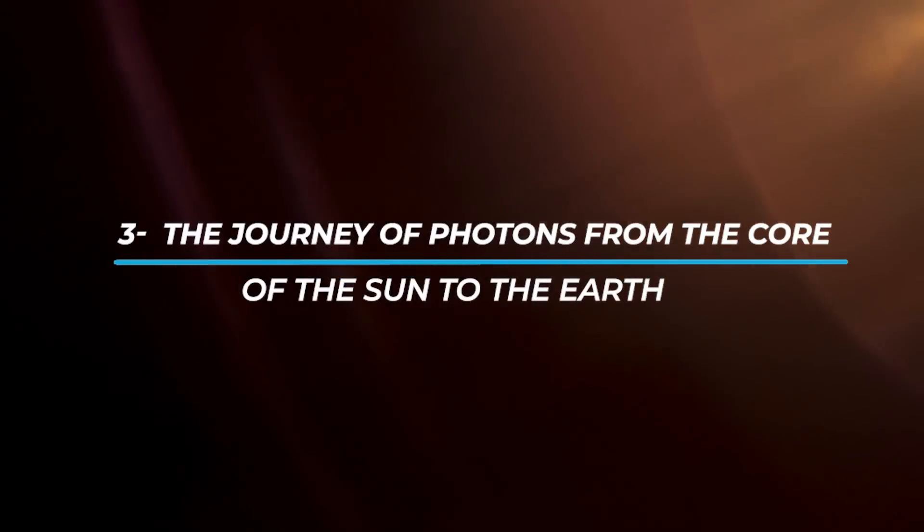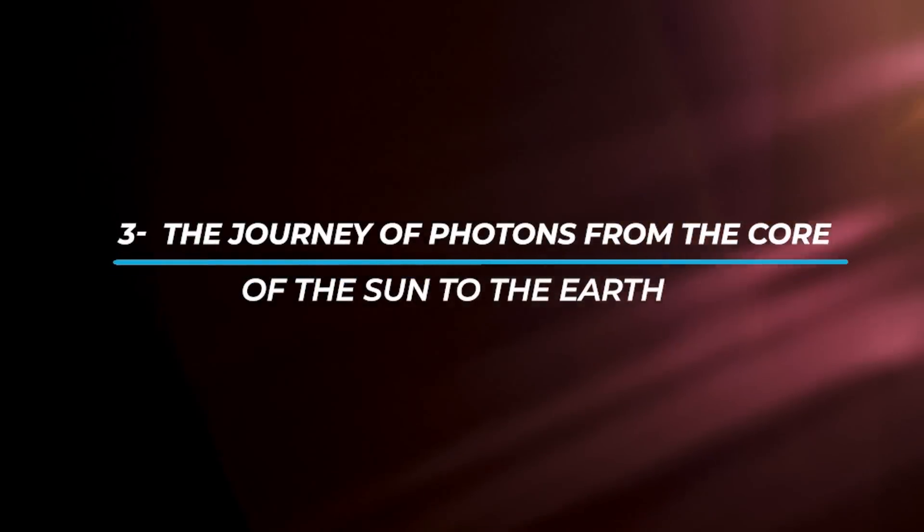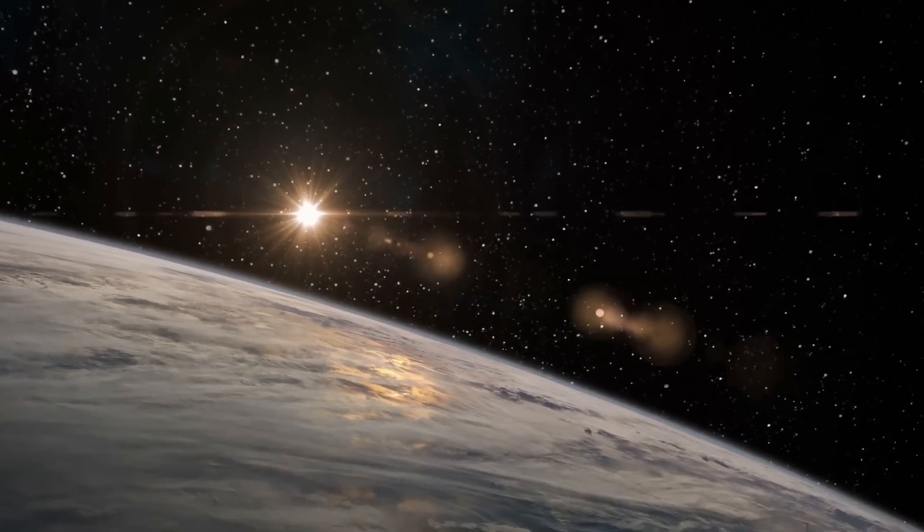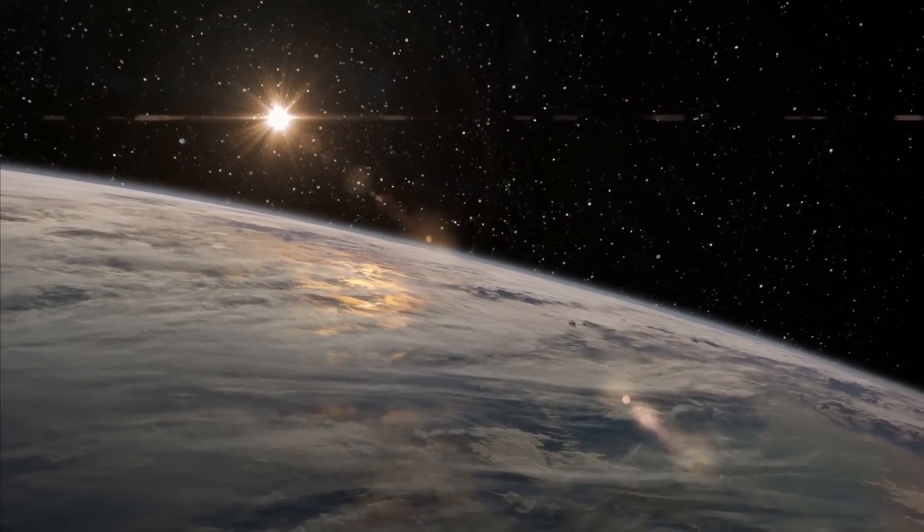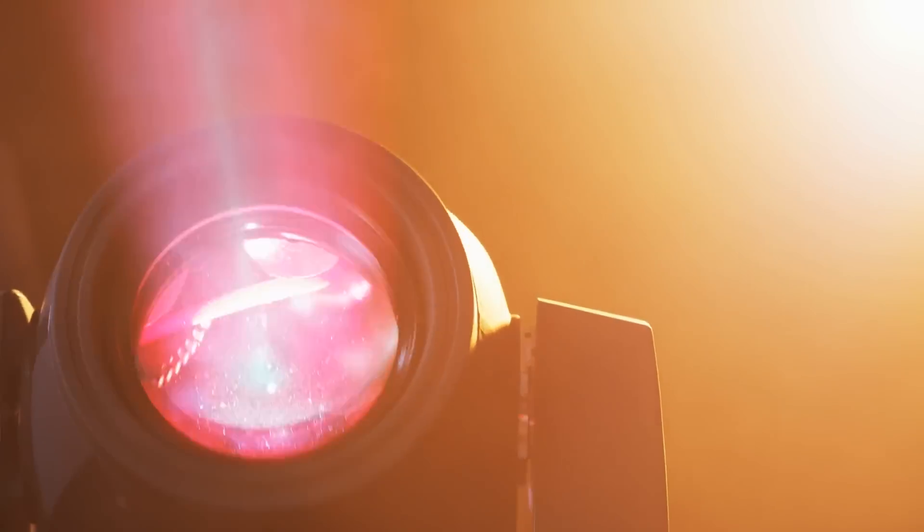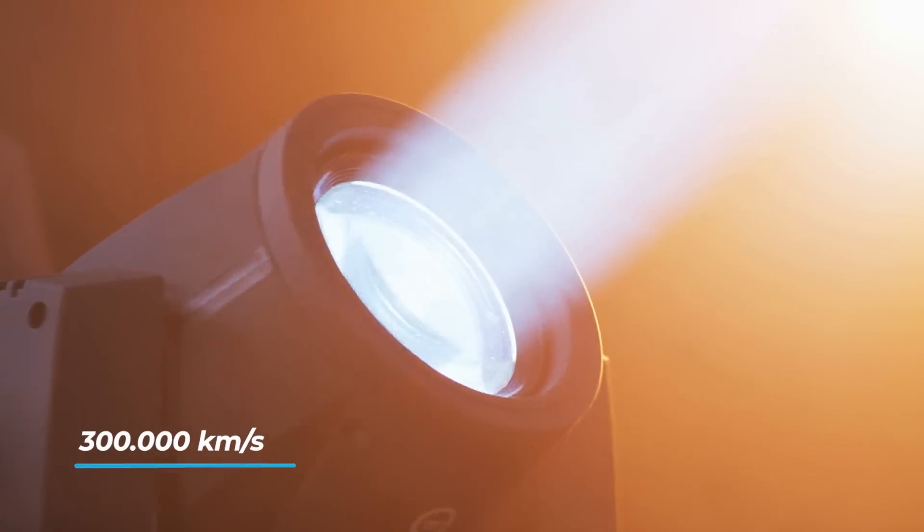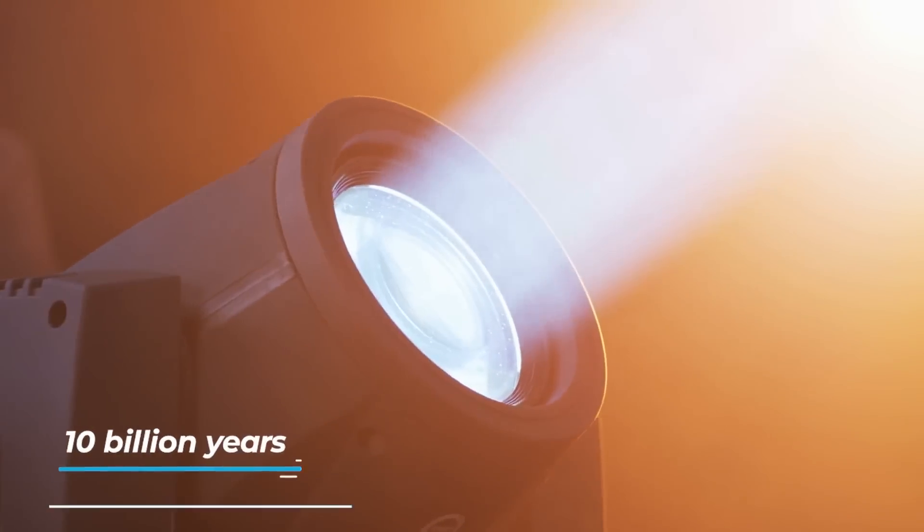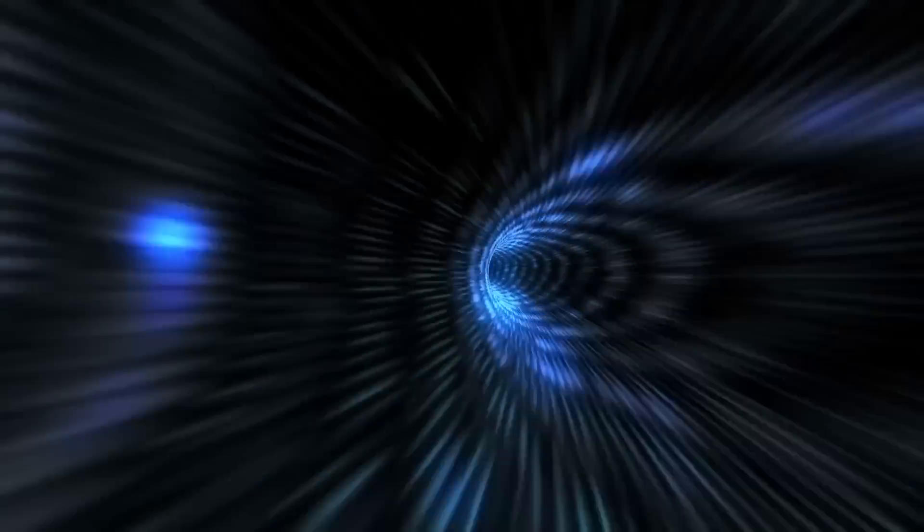The Journey of Photons from the Core of the Sun to the Earth. So, our sun, such as all the other stars in the universe, shines by its own light thanks to nuclear fusion reactions which occur in its inner shell and produce light and electromagnetic energy. We all know that light is pure, massless energy that travels at a constant speed of 300,000 kilometers per second. It's the fastest thing we know in our universe.